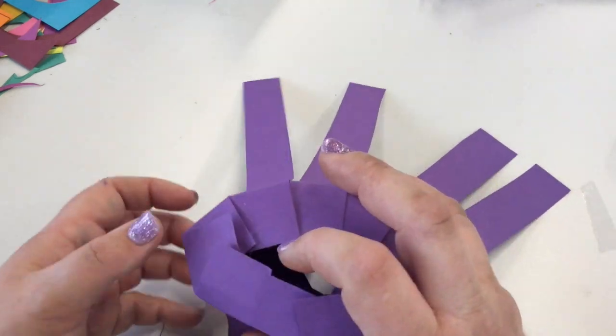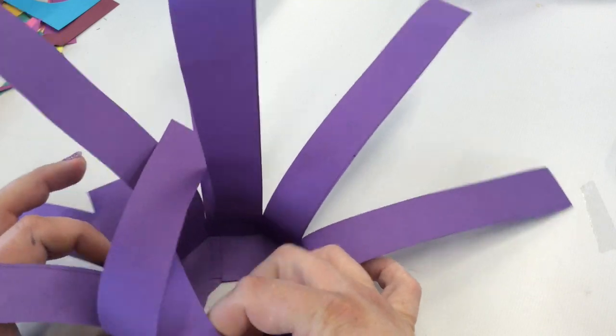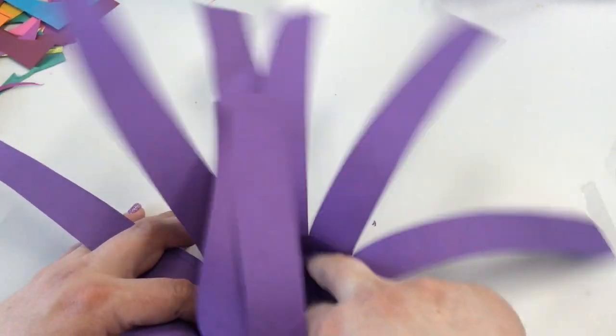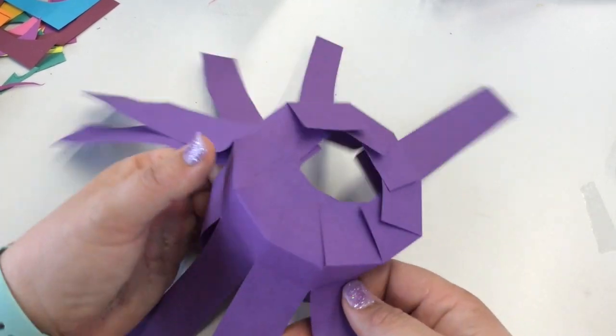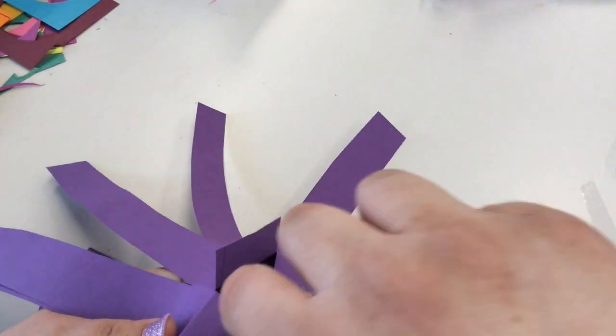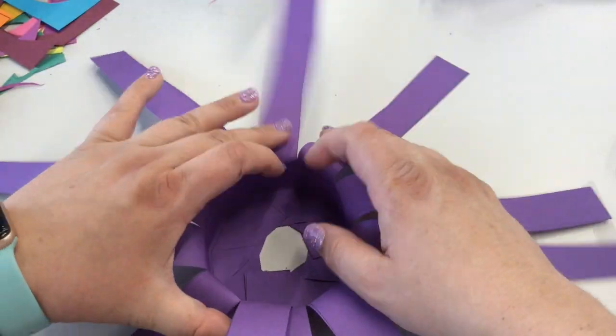Flip your vase over so the bottom part of the vase is now touching the table, and then just stick your fingers in and make sure everything is nice and secure. It's not going to go anywhere. You may have to finagle it a little bit and add some more glue to make sure that it stays put.